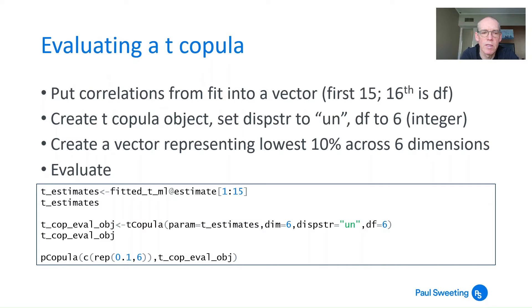For t_estimates, we use fitted_tml - that's the object we created. From that, we use estimate as the item we're looking at, and we want the first 15 items. Estimate throws out a vector, which is a single column of information, and we want the first 15 values, from 1 colon to 15. We can confirm we have just the correlations with no degrees of freedom.